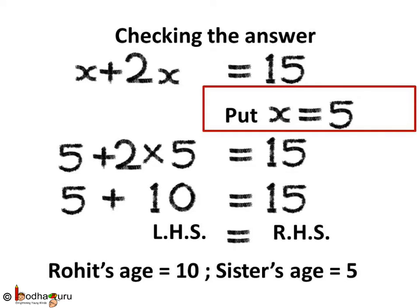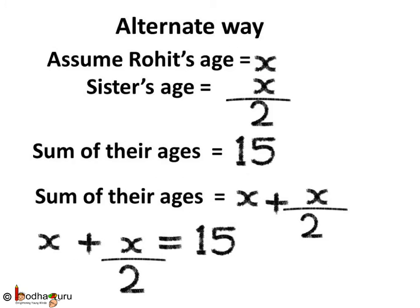Thus we solved the given problem. Now you might ask why did we assume sister's age only as x? Why not Rohit's age? So let us do it in an alternate way. Let's assume Rohit's age is x. As sister's age is half of Rohit's age, the sum of their ages is equal to x plus x by 2. We also know the sum of their ages is equal to 15, so equating these two quantities: x plus x by 2 is equal to 15.